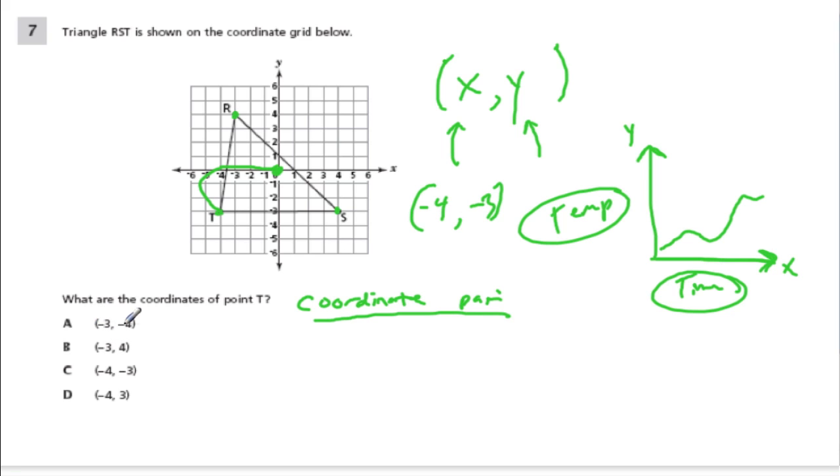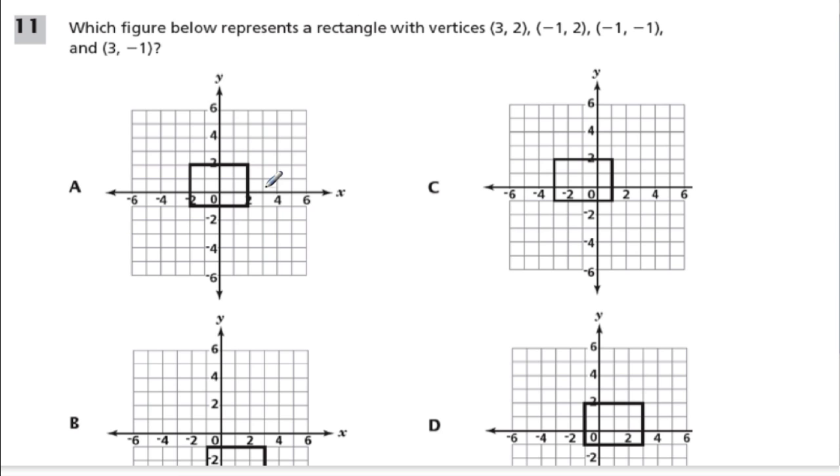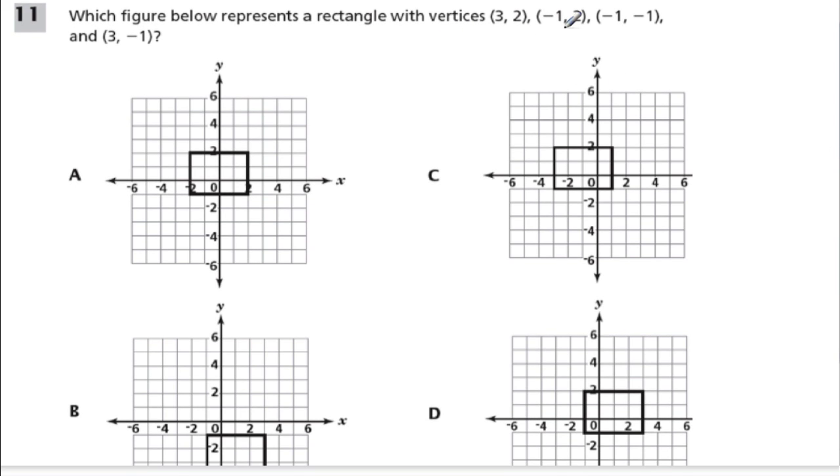And they switch it here, trying to trick us, I guess. And there it is right there. Now, sometimes they might do this, where you have the vertices on a rectangle. So they want to know which figure below represents a rectangle with these vertices.